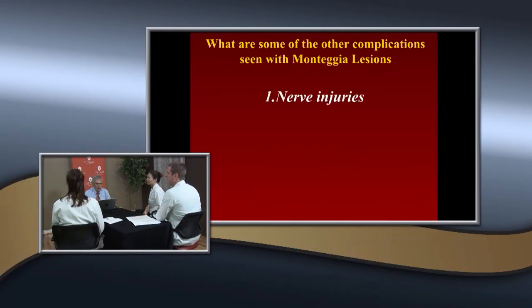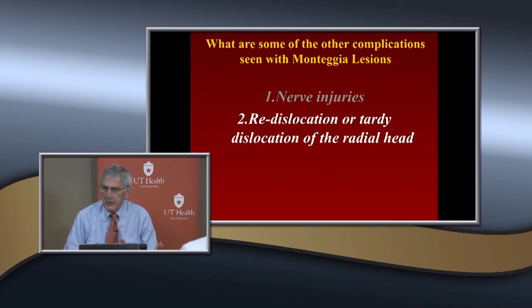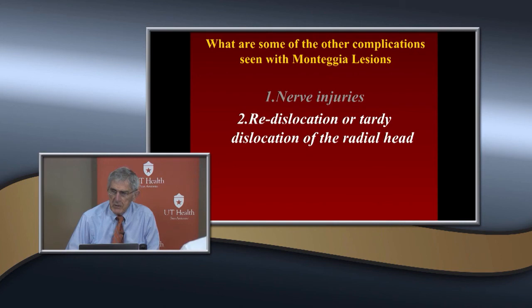Peterson noted the Bell-Taws procedure is not anatomic because it doesn't truly centralize the radial head. He and Seal described a more anatomical repair, which is more complex but probably the better option to consider. Other complications of Monteggia lesions include nerve injuries — Type 3 has the highest rate of nerve injury — redislocation or tardy dislocation of the radial head, which occurs when plastic deformation of the proximal ulna is not adequately stabilized and reforms, and associated fractures.